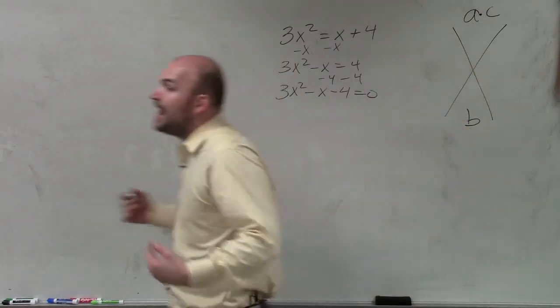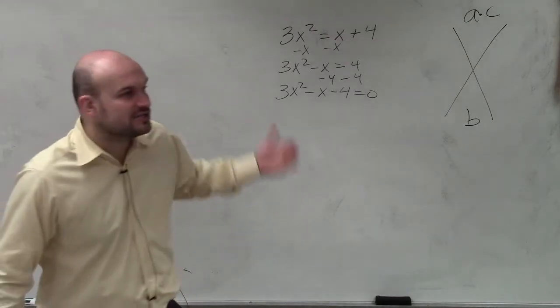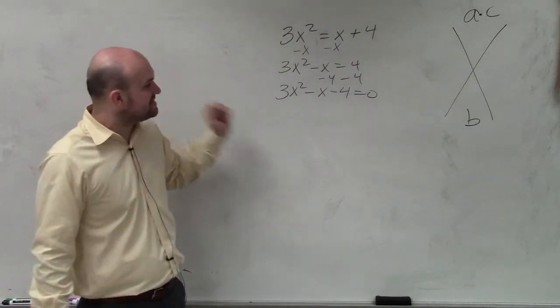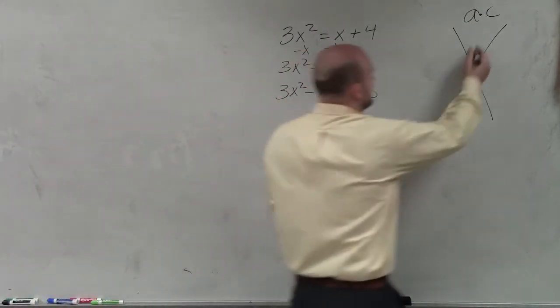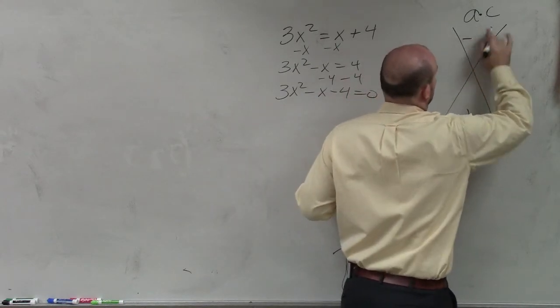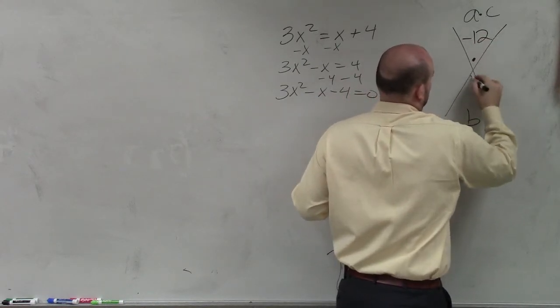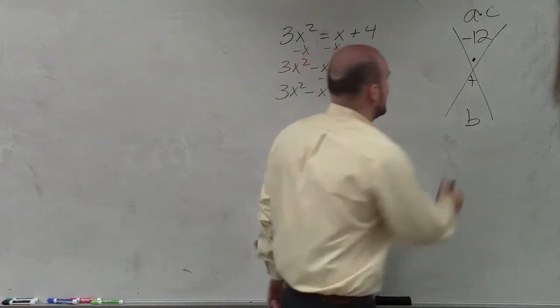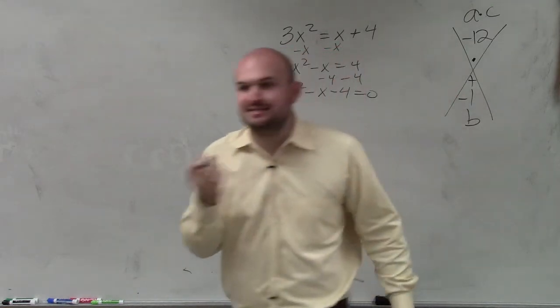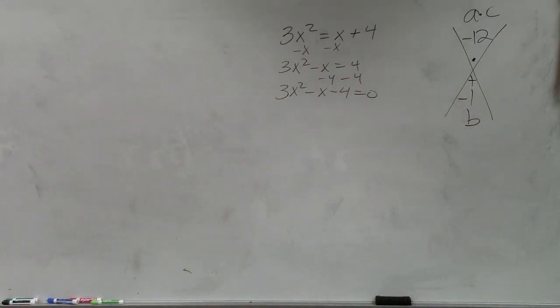OK? Now, though, we have a is not 1. So we need to make sure we multiply a times c. 3 times negative 4 is negative 12. And then our b is negative 1. Make sure when you do not see a physical number there that you understand that it's negative 1.